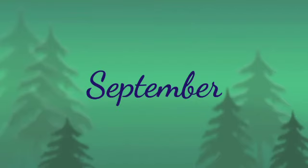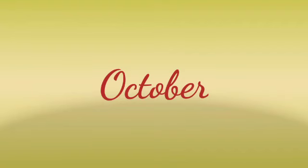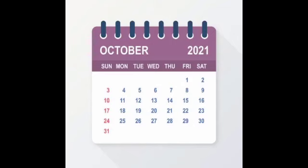The ninth month is September. S-E-P-T-E-M-B-E-R, September. September has 30 days. How many days are there in September? Yes, 30 days. Next one, October. O-C-T-O-B-E-R, October. October is the tenth month of the year. It has 31 days. How many days are there in October? Yes, there are 31 days in October.